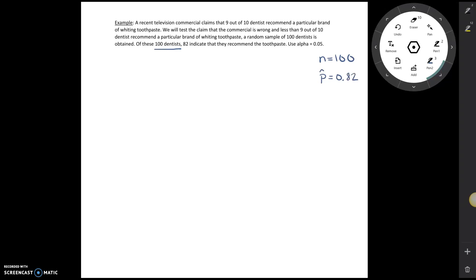And then the new thing we're working with is notice they say we're going to test the claim that the commercial is wrong and less than 9 out of 10 recommend. So that part that we're testing, that value, that's the value that's going to go in our hypotheses. And so that tells me that P naught is equal to 9 divided by 10, which is 0.90. So once we've identified these three things, I'm going to kind of put a box around them. We're going to need these as we work throughout. So that's why it's a good idea to identify them first.